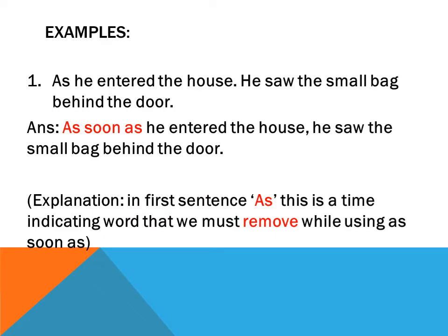Example one: 'As he entered the house, he saw the small bag behind the door.' Here, 'as he entered the house' is the first action, and 'he saw the small bag behind the door' is the second. We begin with 'as soon as' and remove the time-indicating word 'as.' The answer is: 'As soon as he entered the house, he saw the small bag behind the door.'